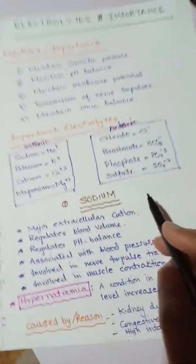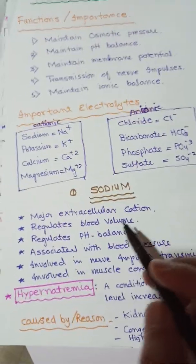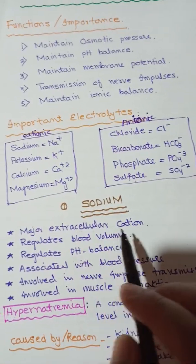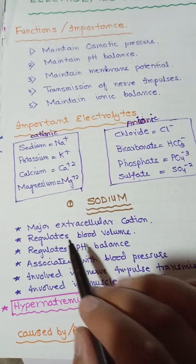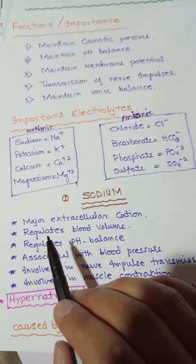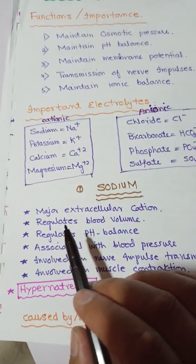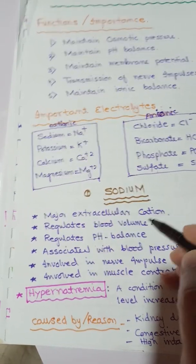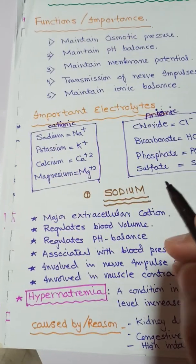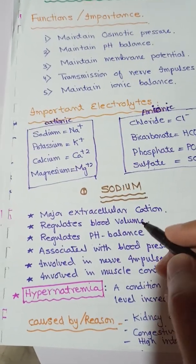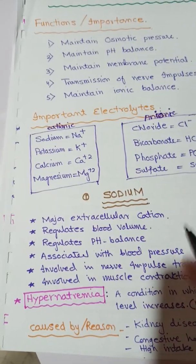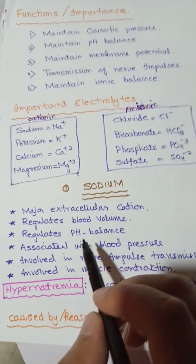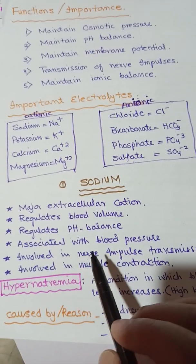First is the sodium ion. Sodium ion is important because it is the major extracellular cation — it is present in extracellular fluid and outside the membrane of the cell. It regulates blood volume because it is present outside the cell and it maintains osmotic pressure, due to which water is absorbed from the gastrointestinal tract and blood volume increases. Similarly, it regulates pH balance.